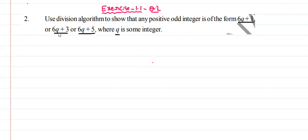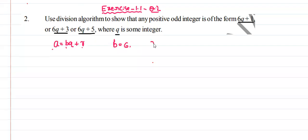We know that Euclid's algorithm and division algorithm are the same. A is equal to bq plus r, where a and b are integers, q is the quotient and r is the remainder, and a should be greater than b. Here, b is equal to 6, and since r is always less than b, the possible values of r are 0, 1, 2, 3, 4, 5 — all less than 6.